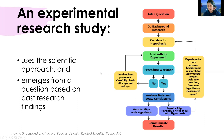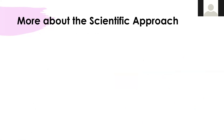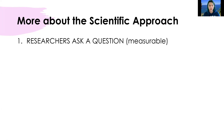A student asks for clarification: for the first scientific article assignment, the article is given by the instructor — students don't get to choose. For that article, they write a three to four page critique. The student confirms their understanding that experimental research is trying to find a cause and effect relationship. The instructor agrees and says she'll go into more detail about experimental research, noting this was just an overview of the scientific approach.